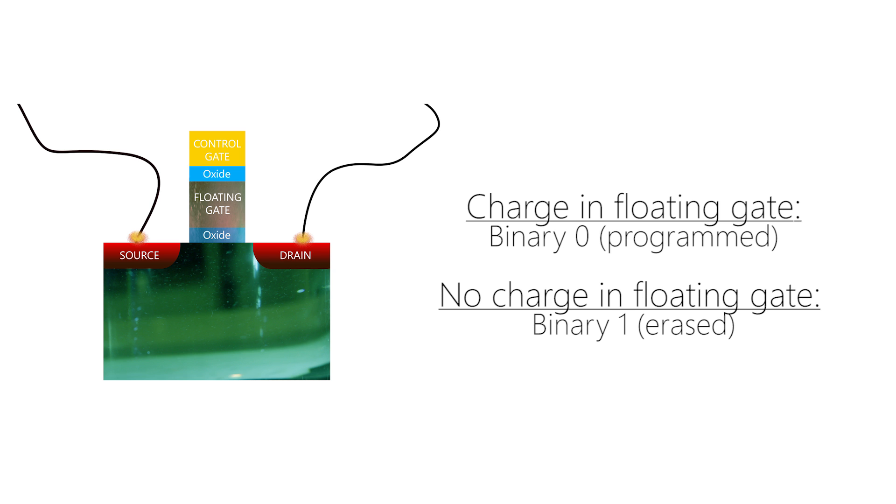On the other hand, if there's no charge in the floating gate, then current will flow, and the result is a binary one. Now you can see how this process might be a little bit destructive to the cell over time. This is because the oxide layer, which stops the charge from escaping, will gradually erode.